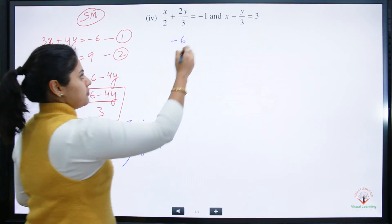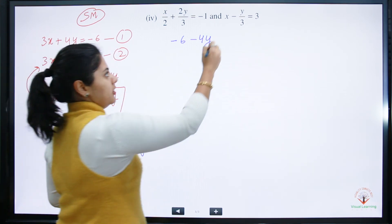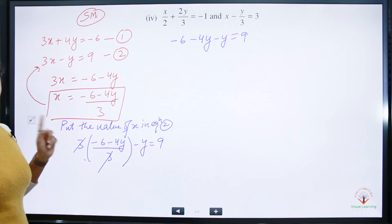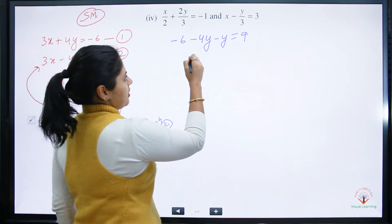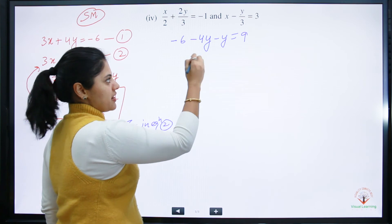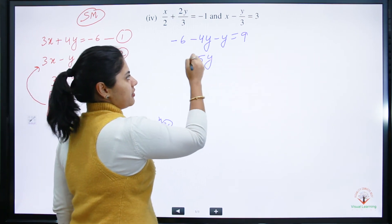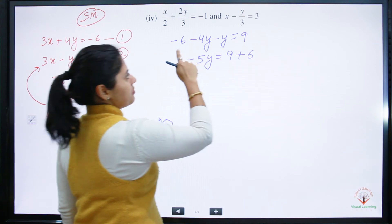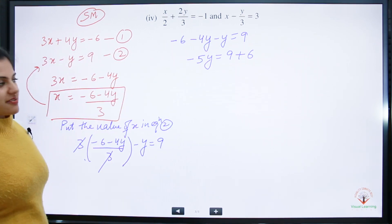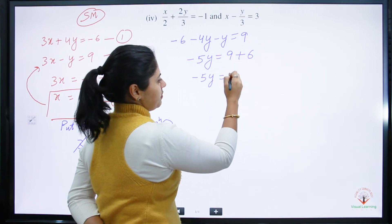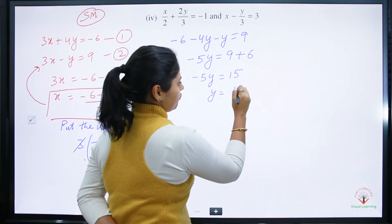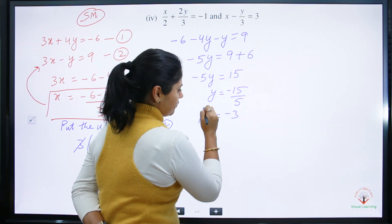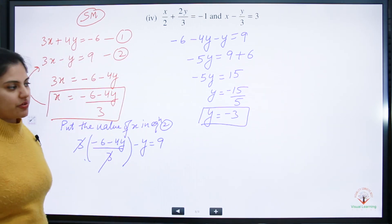After cancellation we have: minus 6 minus 4y minus y equals 9. Combining the y terms: minus 4y minus y gives minus 5y. Check the sign with the bigger term — 4 is the bigger coefficient, so it is minus 5y. Moving minus 6 to the right: 9 plus 6 equals 15. So minus 5y equals 15, and y equals minus 15 divided by 5, giving y equals minus 3.